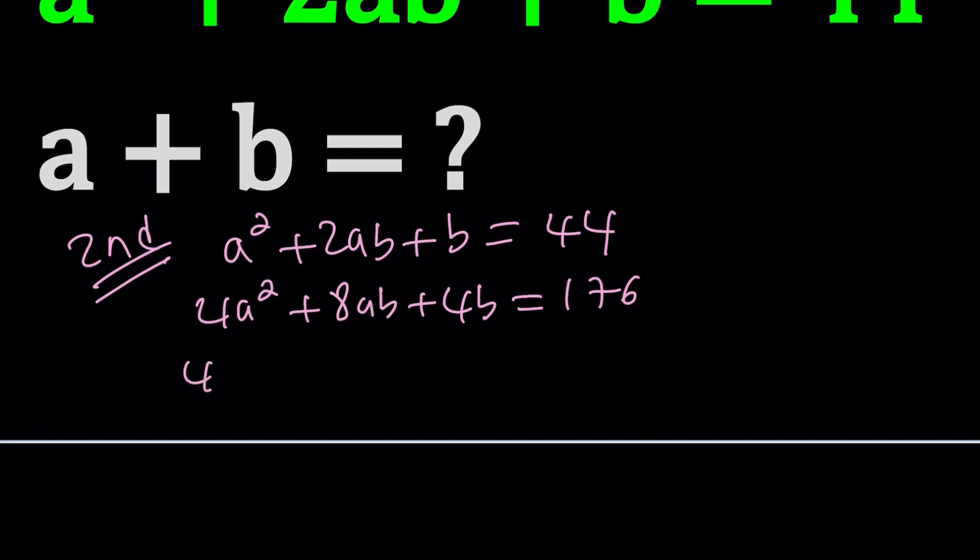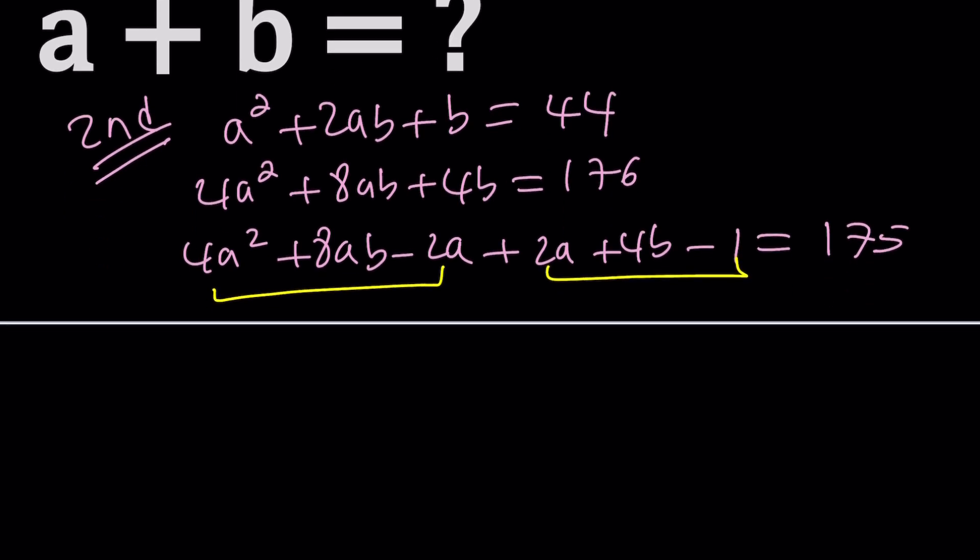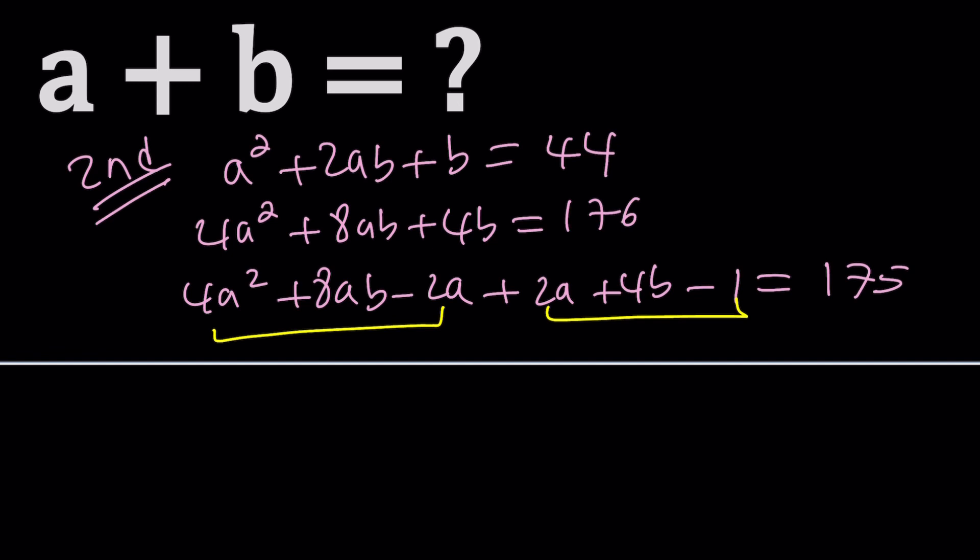First, we're going to go ahead and subtract 2a, and then add 2a. And then we're going to subtract 1 from both sides to get 175. How on earth, why are you doing this? Why on earth are you doing all of that? To get to the answer. Easy, right? Why did the chicken cross the road? That type of question.